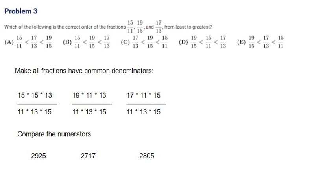From this, we can say that the least amount is 19 over 15, because it has the least value after getting into common denominator. And after that would be 17 over 13 and then 15 over 11. Therefore, the answer is E.